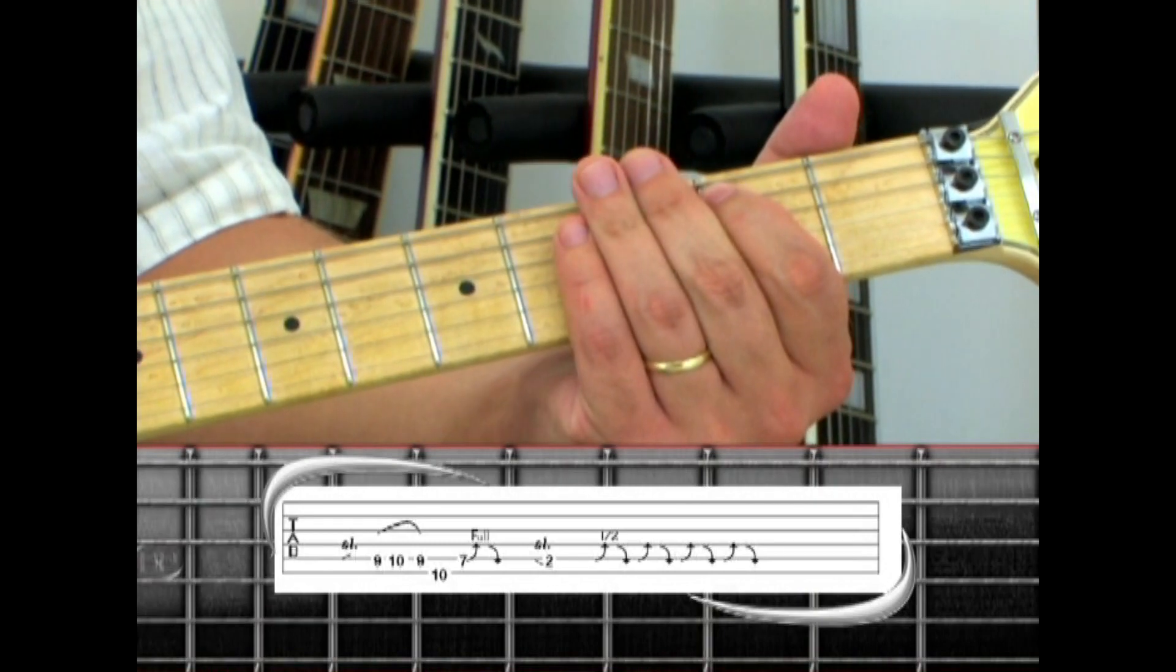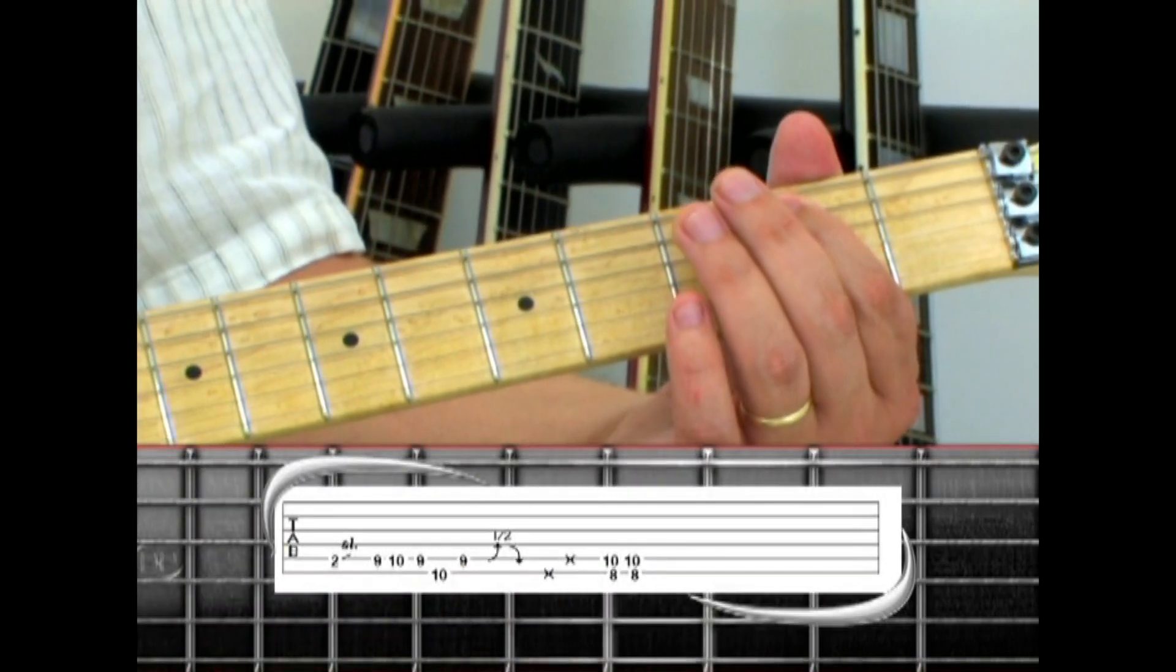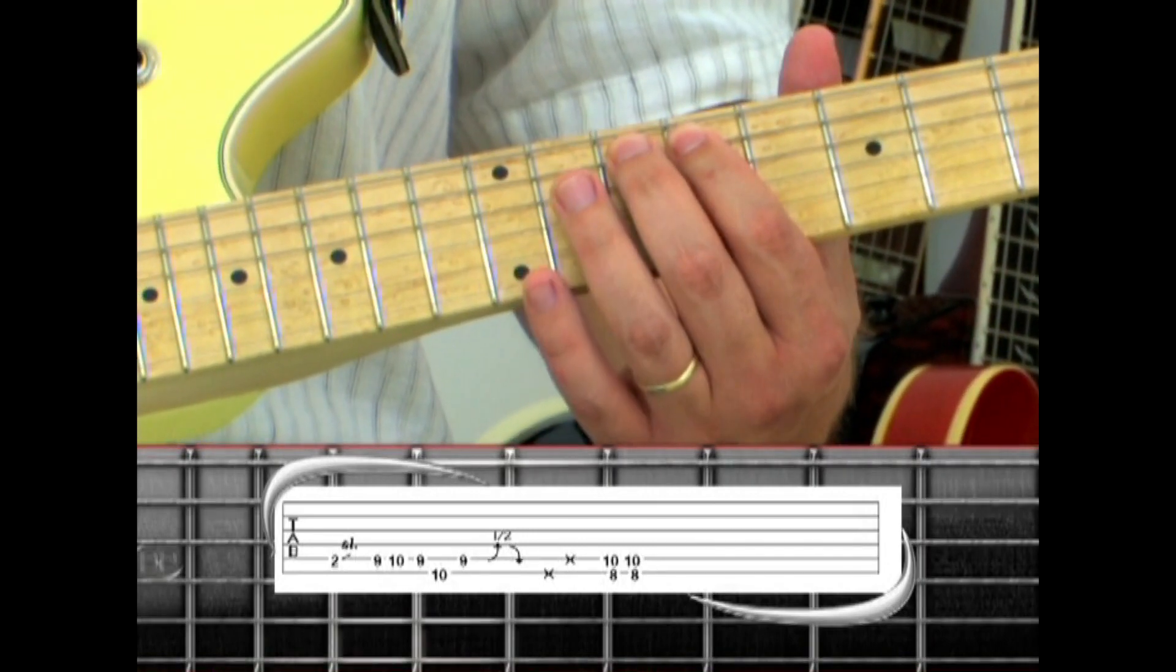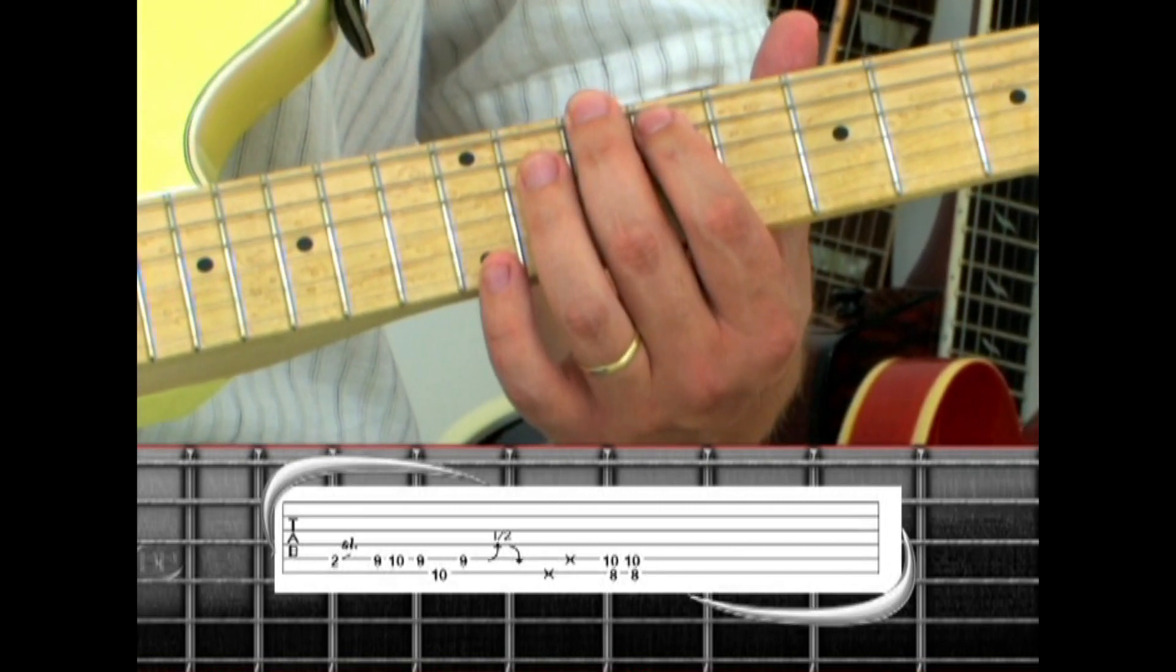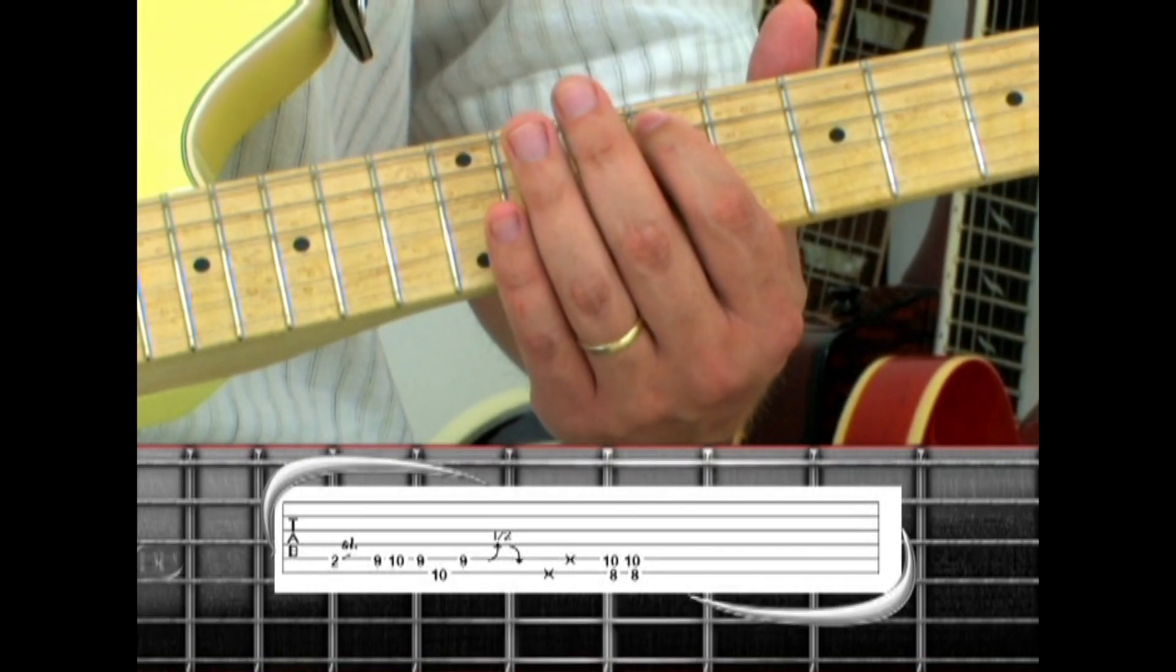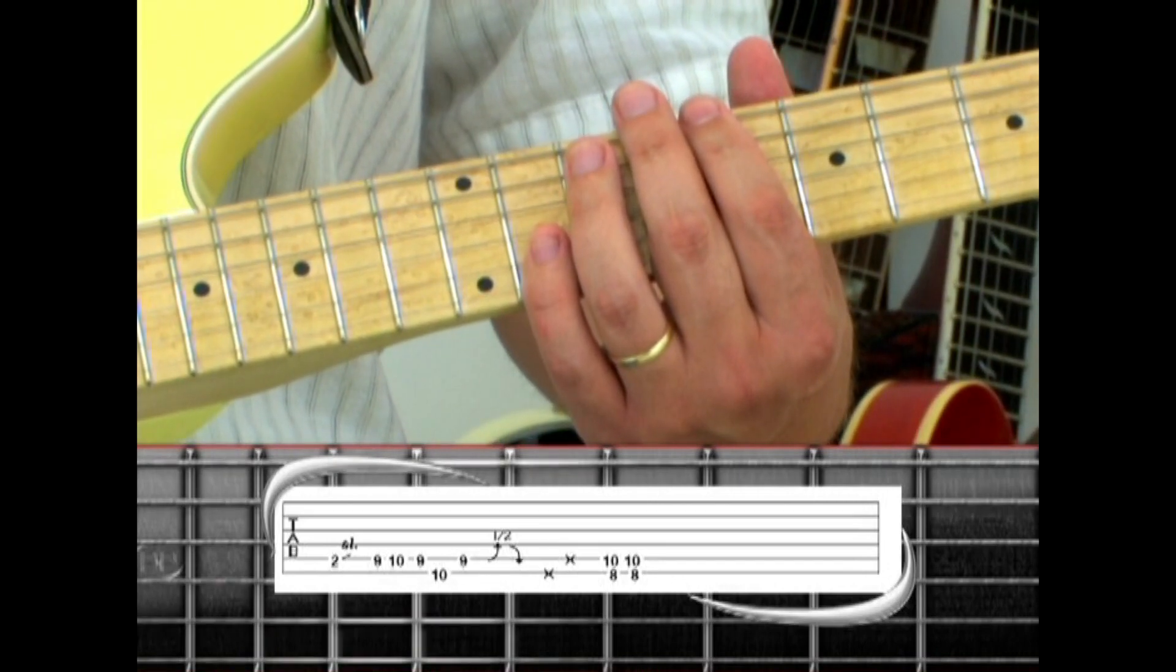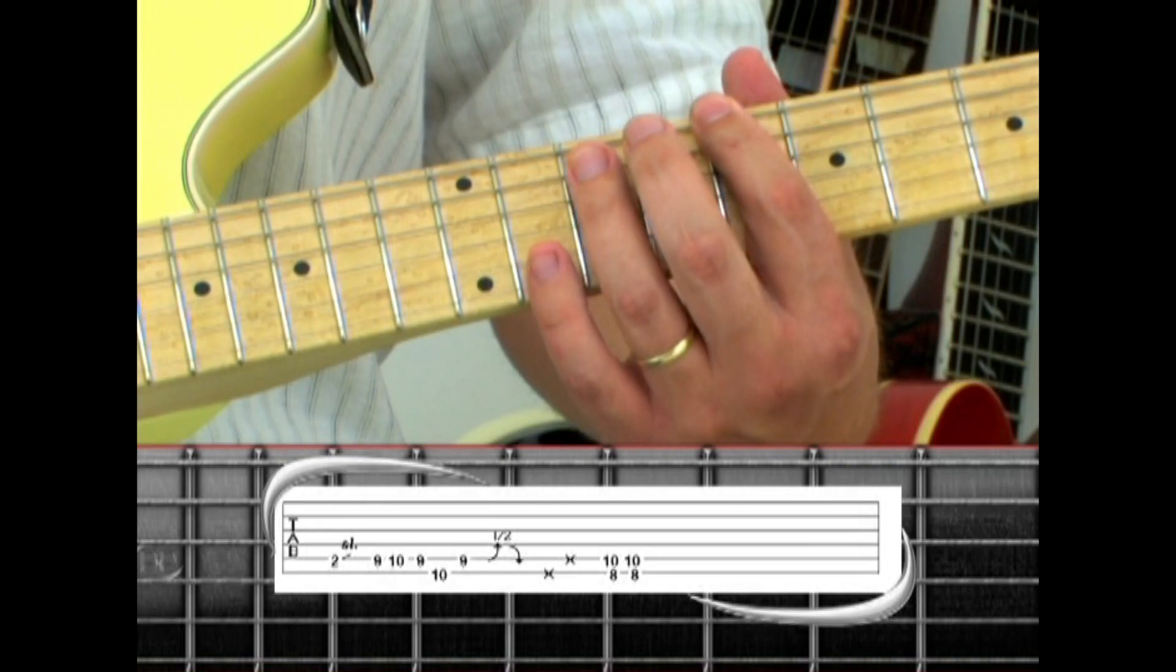This is repeated several times with many variations. Next pick the 2nd fret and slide up to 9, play 10, 9, then the 6th string 10, back to 5th string 9, and a half bend, release, then mute 2 notes on the 6th and 5th string, followed by 2 C5 power chords, 6th string 8, played with 5th string 10.